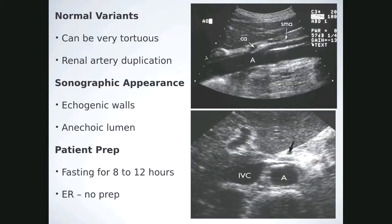Normal variants: the aorta may be tortuous, and there will often be renal duplication in 25% of the population. Sonographically, the walls are going to be very echogenic with an aneurysm. Patient prep for the aorta is 8 to 12 hours fasting. If the patient comes in through the ER, regardless of fasting status, we attempt the exam anyway because it's an emergency — there is no prep if they present through the ER.